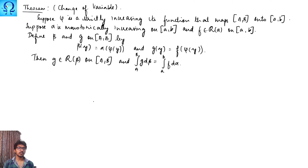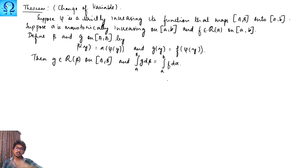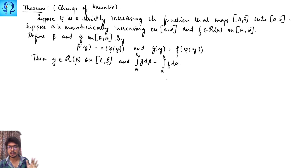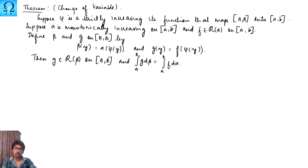And the integral of g dβ over [A, B] is the same as the integral of f dα over [a, b]. These integral values are finite values, so whether you integrate this function or that function over this interval or that interval, you are going to get a value, and we are saying these two values have to be equal. Now let us see the proof.